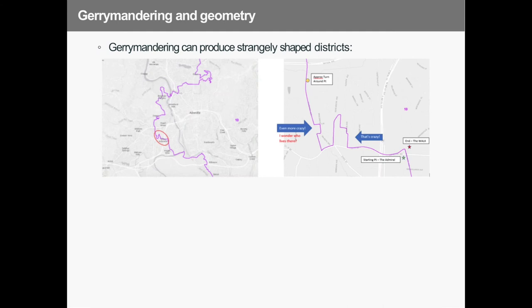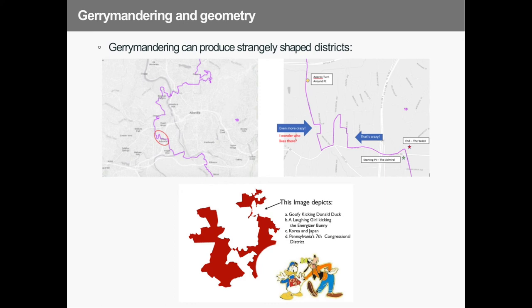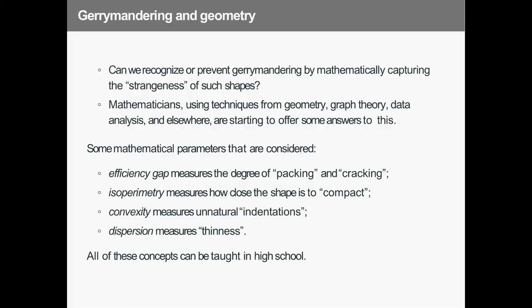Some districts are so finely gerrymandered that a border goes around a single house just to put it in a different district. There's a famous district called the 'Goofy Kicking Donald Duck' district, where the contiguity condition is technically met by a single tiny seafood restaurant connecting two parts. You can look at this mathematically — it can be worked into a 10th-grade geometry class, using concepts like efficiency gap, isoperimetry, convexity, and dispersion. These are all 10th-grade concepts. There's no reason why we shouldn't be teaching these things in high school.